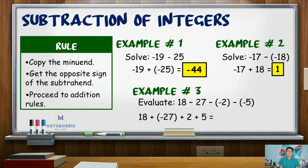Adding the integers with like signs — 18 plus 2 plus 5 — gives us 25, plus negative 27. We now have unlike signed integers. Subtracting 27 by 25 gives 2. Since 27 has a greater absolute value, we copy the negative sign. Hence, the difference is negative 2.